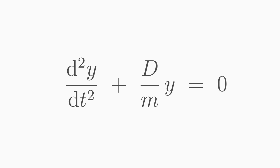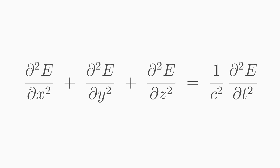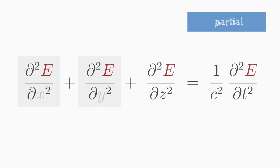Our equation for the oscillating mass is an ordinary differential equation — the function y depends only on one variable, the time t. The wave equation, on the other hand, is a partial differential equation. Partial means that the searched function e depends on at least two variables and derivatives with respect to these variables occur in the equation. In this case, e depends on four variables t, x, y, and z, and derivatives with respect to all four appear in the equation.